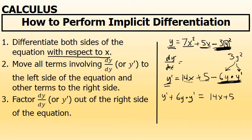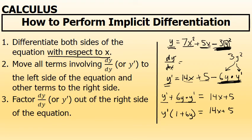Step 3: on the left side of the equation, where we have all of the terms that involve a factor of y prime, we're going to factor y prime out to the front. Between the two terms — y prime and 6y times y prime — there's a common factor of y prime. Factoring that out to the front, I'm left with y prime times the quantity 1 plus 6y. Note that if you distribute y prime back through the parentheses, you would end up with what you had on the line above.